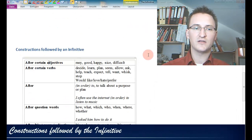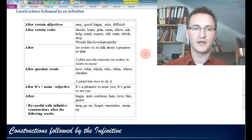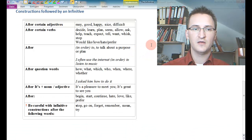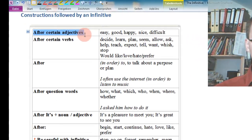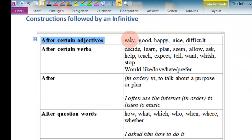So let's take a look at a set of words that require an infinitive. The infinitive follows after certain adjectives, for example: easy, good, happy, nice, difficult. 'You are easy to love.' 'The rabbit was difficult to find,' and so on. This is the base structure.